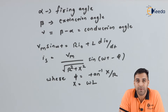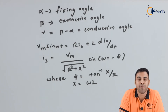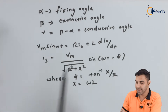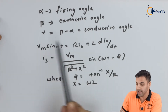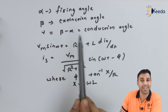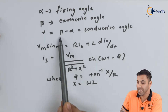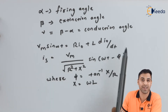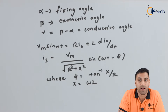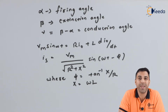Now let's derive mathematically some basic expressions for single phase half wave rectification. Let alpha be the firing angle, beta is called the extinction angle, and gamma — which equals beta minus alpha — is called the conduction angle. The conduction angle is the angle range in which we see the output voltage.